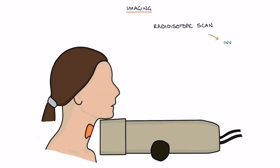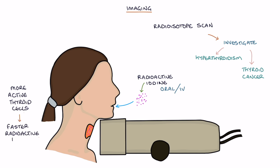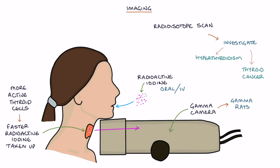Radioisotope scans are used to investigate hyperthyroidism and thyroid cancers. Radioactive iodine is taken orally or intravenously and travels to the thyroid where it's taken up by the thyroid cells. Iodine is used by thyroid cells to produce thyroid hormones, so the more active the thyroid cells, the faster the radioactive iodine is taken up. A gamma camera detects gamma rays emitted from the radioactive iodine — when more is taken up by a specific area, that area emits more gamma rays, giving functional information about the thyroid gland.